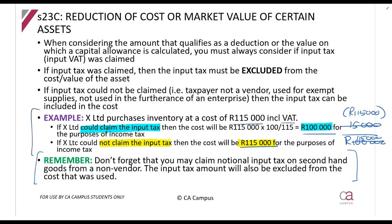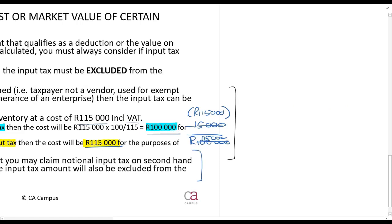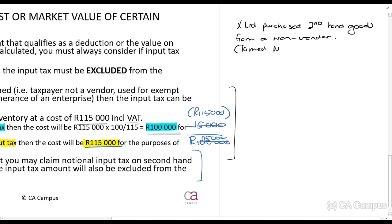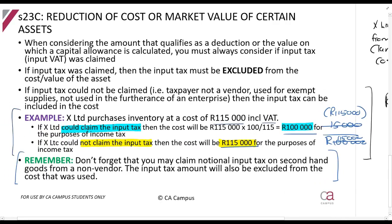Be especially careful in questions when amounts are given excluding VAT, because if you buy secondhand goods from a non-vendor, that cost will exclude VAT but you may still be able to claim notional input tax on it. For example, if X Limited purchased secondhand goods and claimed notional input tax, and the cost was R100,000, then for income tax you would use the amount times 100 over 115 — which is the VAT portion you effectively claimed.